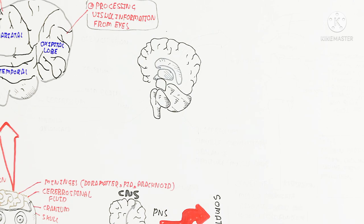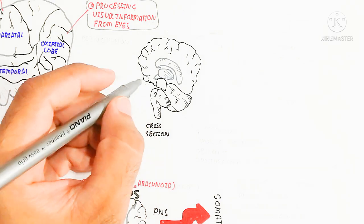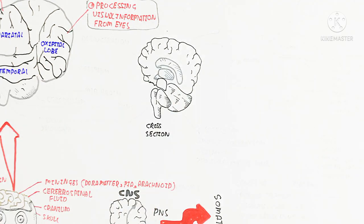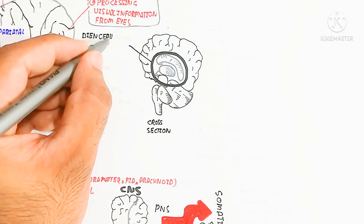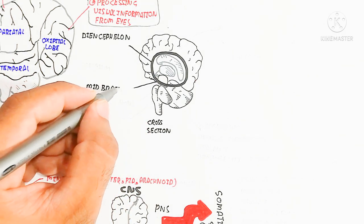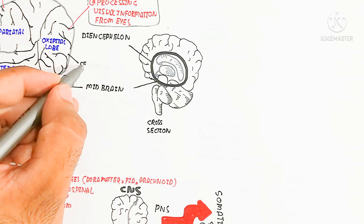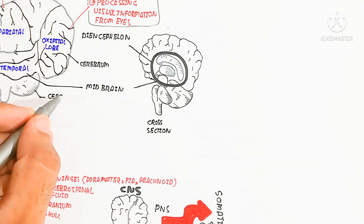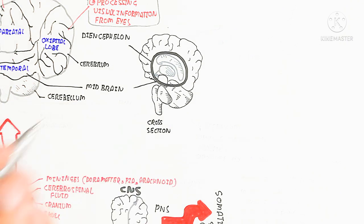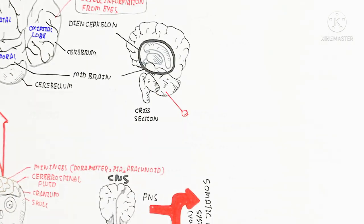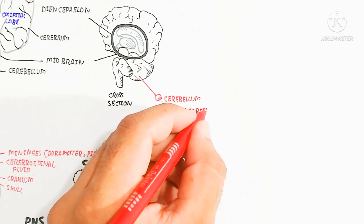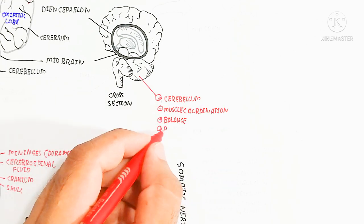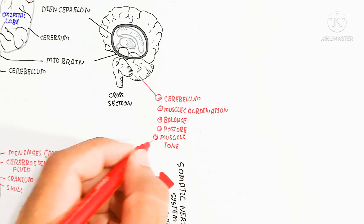A cross-section of the brain shows the diencephalon inside. The diencephalon is made up of different parts we will discuss. There is also the midbrain. The forebrain is the frontal part, while the hindbrain is at the back. The cerebellum is used for muscle coordination, balance, posture, and muscle tone. The next video will cover these in more detail.